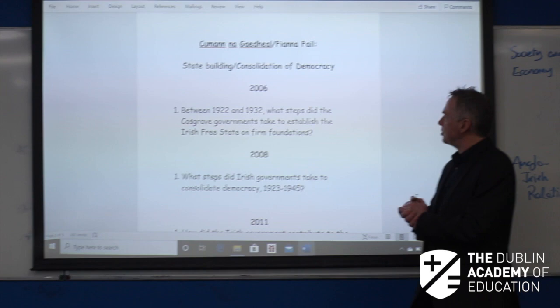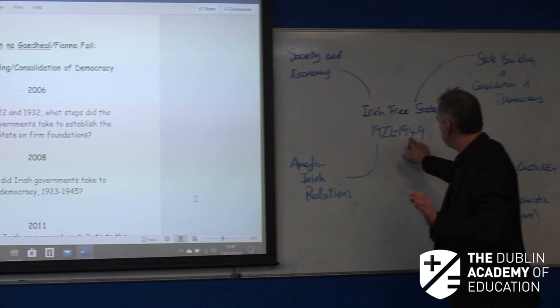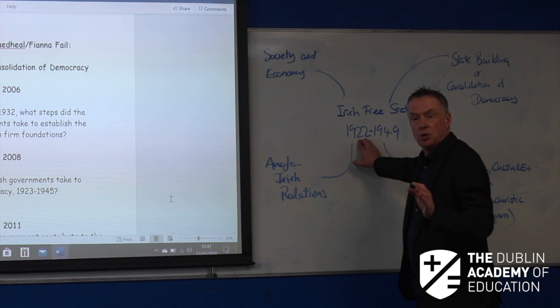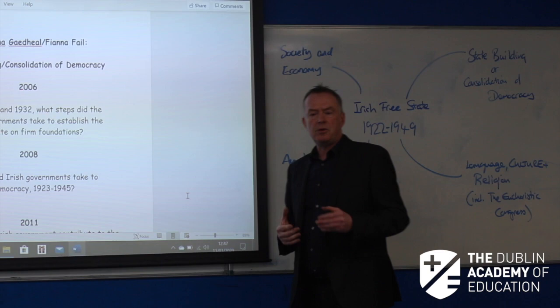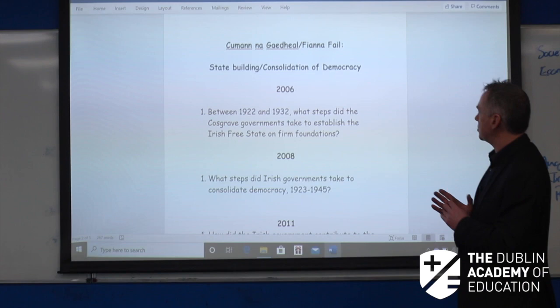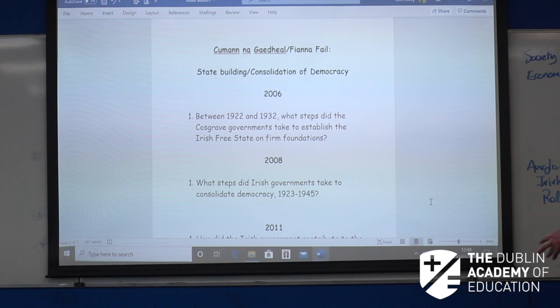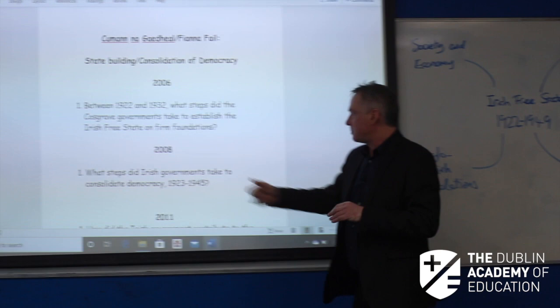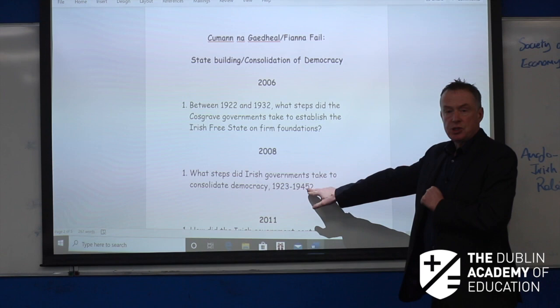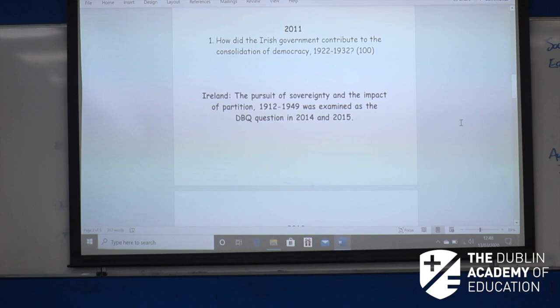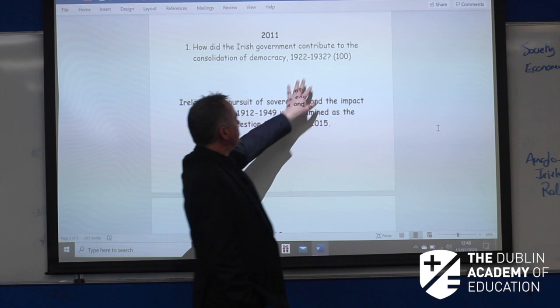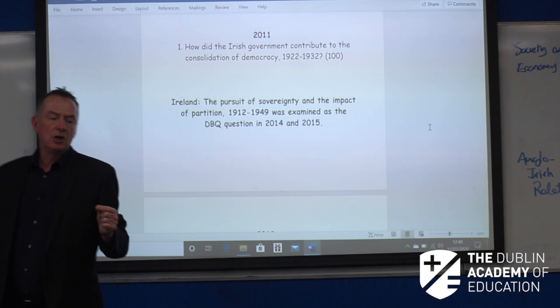Looking at the past questions — 2006, there are variations on the theme between 1922 and 1949. The questions go from 1922, the establishment of the Free State, to 1949, the declaration of the Irish Republic. There can be a variation on a theme within those years. For example: what steps did the Cosgrave governments take to establish the Irish Free State on firm foundations, 1922 to 1932? And what steps did the Irish governments take to consolidate democracy, 1923 to the end of the emergency 1945 — a variation on a theme in 2008. And 2011: how did Irish governments contribute to the consolidation of democracy, 1922 to 1932? So we're talking about Cumann na nGaedheal here — the government of Cosgrave, O'Higgins and people like that.